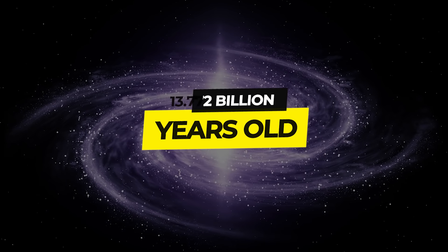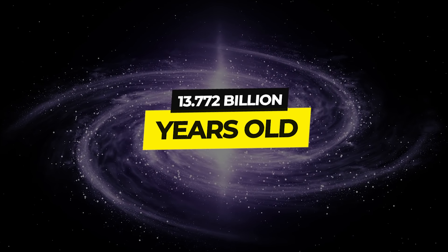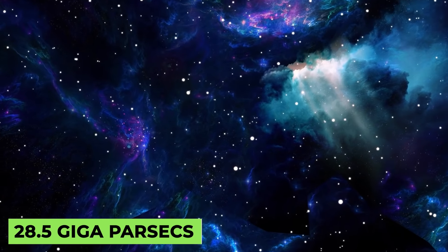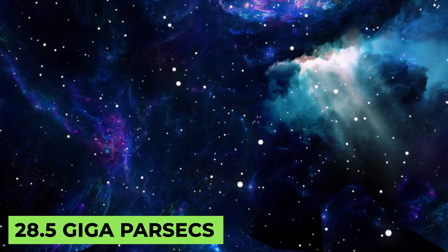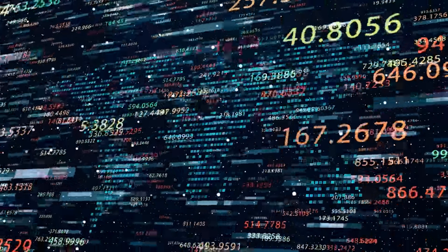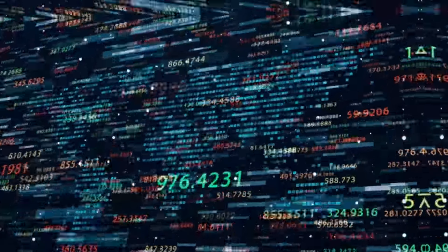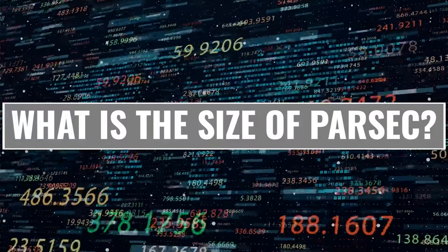Our universe is estimated to be 13.772 billion years old, making it an ancient universe. So how big is our universe? According to current scientific estimates, it's 28.5 gigaparsecs in size. And to get a sense of how significant that figure is, you'll need to know the fundamentals of astronomical units. What is the size of a parsec?